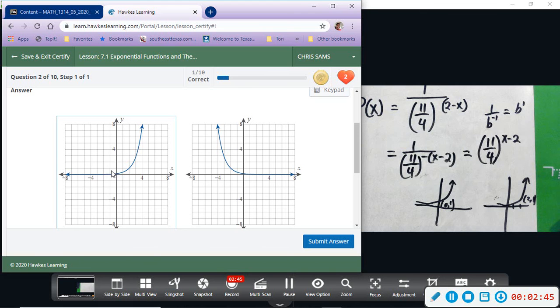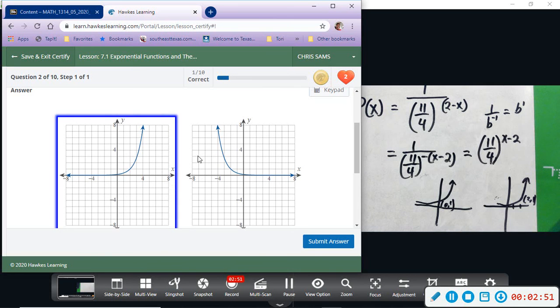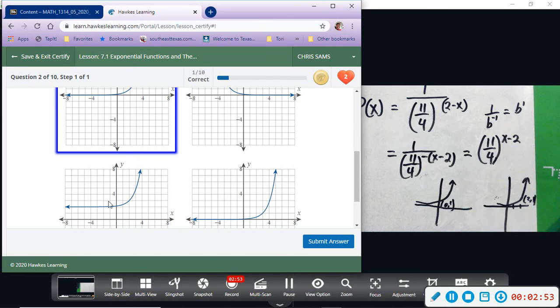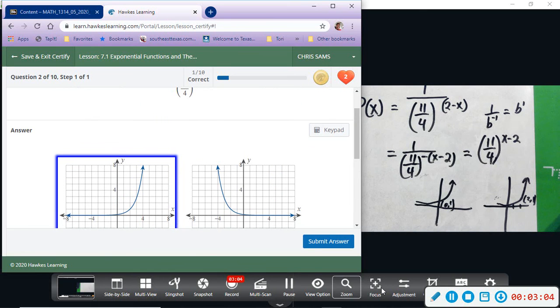So this first one—there's one, two, and it goes through there—so this one looks good. This one is decay. This one is growth, but it is shifted up two, and we don't have a vertical shift. And this one looks like it's going through one, two, three, one. So this first one is going to be the best fit.